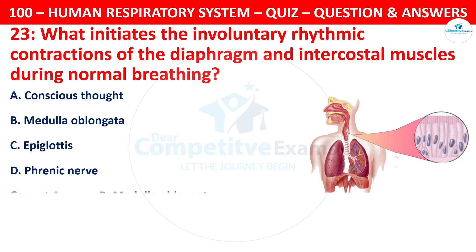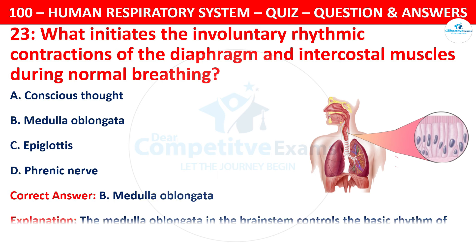The correct answer is B, medulla oblongata. The medulla oblongata in the brainstem controls the basic rhythm of breathing.